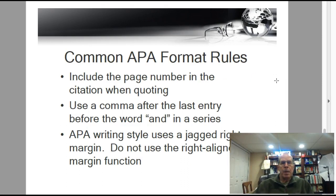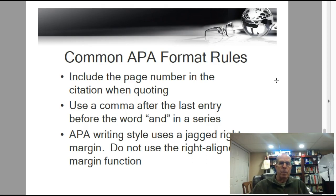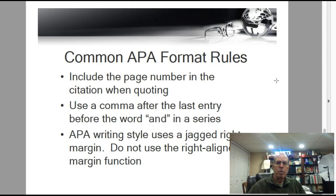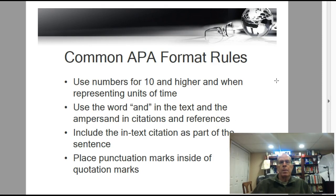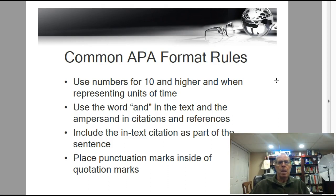Some common APA format reminders: APA uses a comma after the last entry before the word 'and' in a series — I know it's grammatically acceptable to omit it, but APA uses that comma. APA writing style uses a jagged right margin, so do not use right-aligned margin. The rule for numbers is to use numerals for 10 and higher, or when representing units of time — so 'three weeks' uses the numeral, but 'three people' is spelled out. Use the word 'and' in your narrative text and use the ampersand in citations and references.